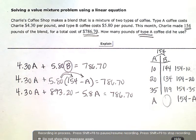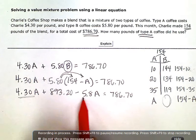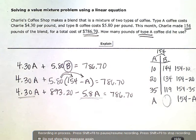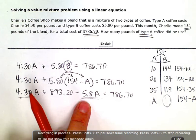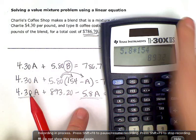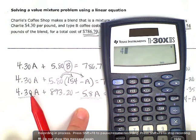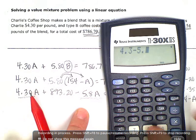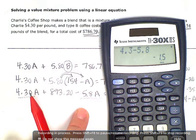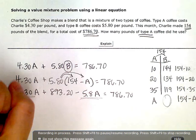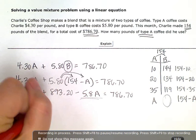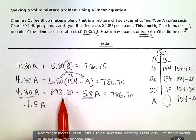So 5.8 times 154 gives me 893.20 minus 5.8 times A equals 786.70. Now I'm going to simplify this side if I can. And I see I have two A terms.